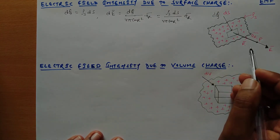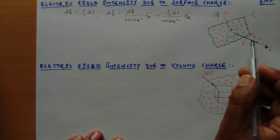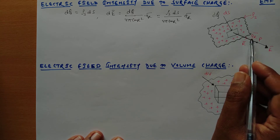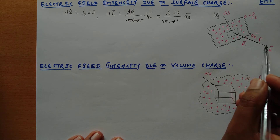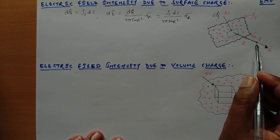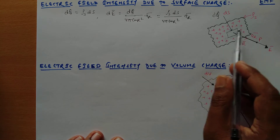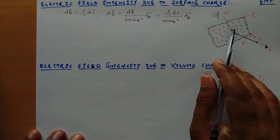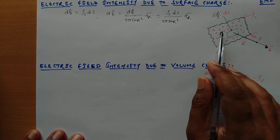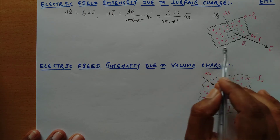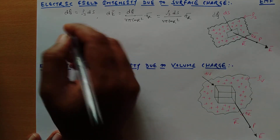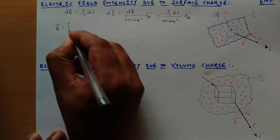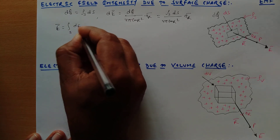Now if we need to find the total electric field intensity at a point P due to the charge distribution over the sheet, we have to find the total integration. We have to take the surface integration, so the total electric field intensity is found from the surface integration of dE.